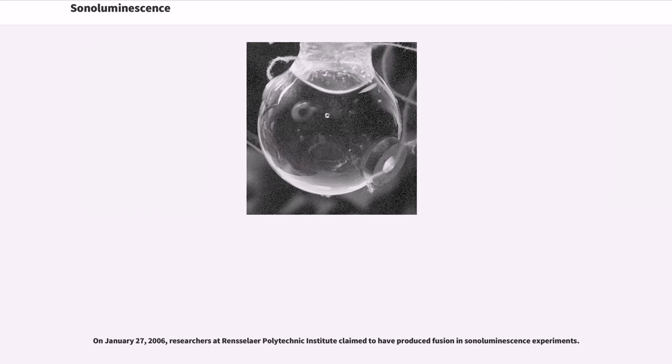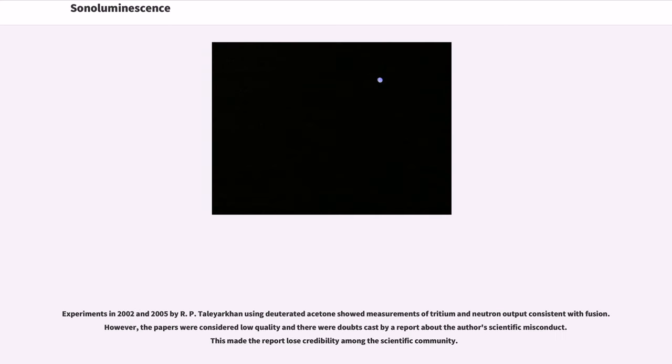On January 27, 2006, researchers at Rensselaer Polytechnic Institute claimed to have produced fusion in sonoluminescence experiments. Experiments in 2002 and 2005 by R.P. Taleyarkhan using deuterated acetone showed measurements of tritium and neutron output consistent with fusion. However, the papers were considered low quality and there were doubts cast by a report about the author's scientific misconduct. This made the report lose credibility among the scientific community.